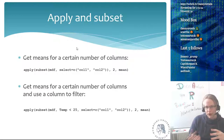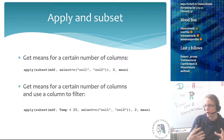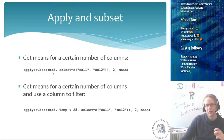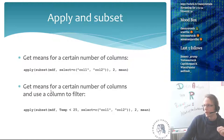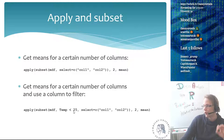We can also subset: if we don't want the mean calculated across all columns but just a couple, we can subset. For example, take MDF (our matrix), select columns 1 and 2, and apply the mean to columns of that subset. You can also use a filter — subset the matrix to the first two columns and then apply the mean across columns.